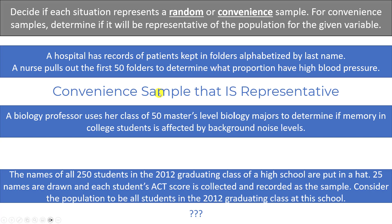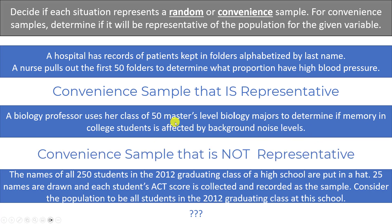Question two: a biology professor uses her class of 50 master's-level biology majors to determine if memory in college students is affected by background noise levels. This is a convenient sample — we're only selecting students in that particular class, not from every individual in the college. We've biased this towards master's-level biology majors. For the variable of memory retention based on background noise levels, they're probably not representative — master's-level students likely have better study and focus skills than the average student. So this is a convenient sample that is not representative of the population.